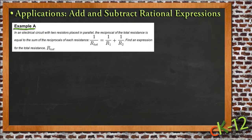So example A says, in an electrical circuit with two resistors placed in parallel, the reciprocal of the total resistance is equal to the sum of the reciprocals of each resistance. So what that's asking, or what that's saying so far, is that in some application, and really for our purposes we don't really care what that application is, but in some application, in this case an electrical circuit, where there's two resistors placed in parallel, so a lot more information that doesn't matter for our math.